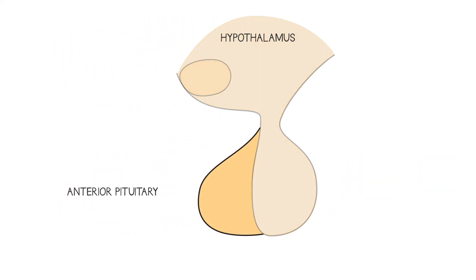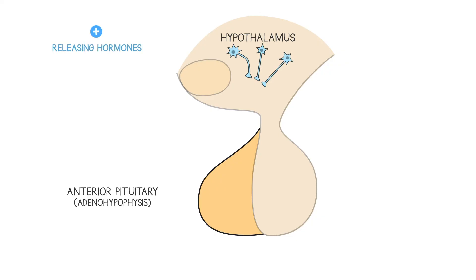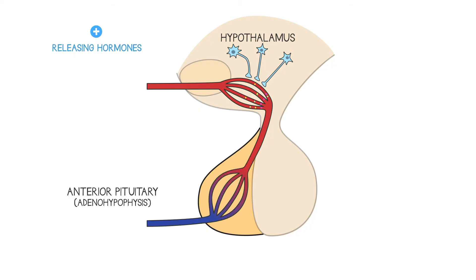The anterior pituitary gland is known as the adenohypophysis. It's not made of neural tissue, so it has to be controlled by the hypothalamus in a different way. The hypothalamus releases its own hormones called releasing hormones into special blood vessels called portal vessels, which take these releasing hormones directly to the anterior pituitary gland. This is quite unusual from a circulatory point of view, because normally capillaries lead to venules, lead to veins and go back to the heart — but here, capillaries at the base of the hypothalamus lead to veins which drain directly to the anterior pituitary gland.